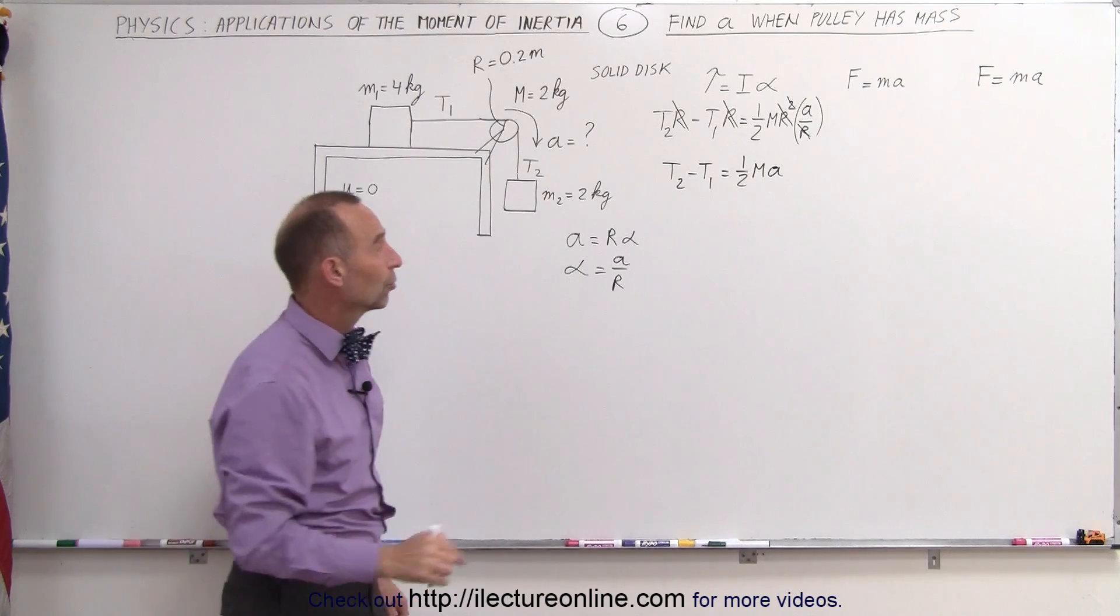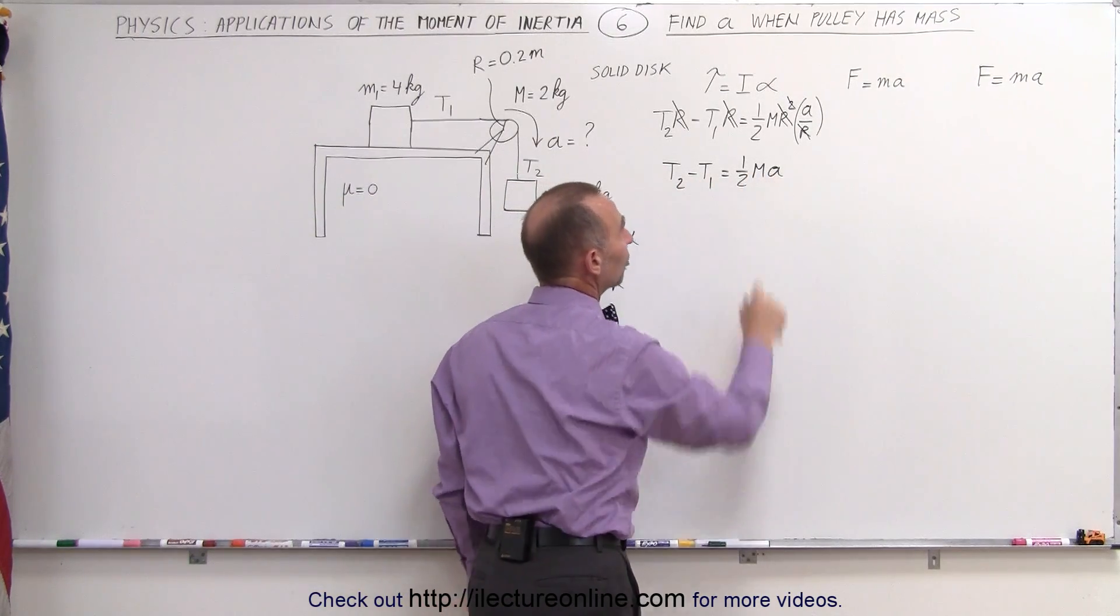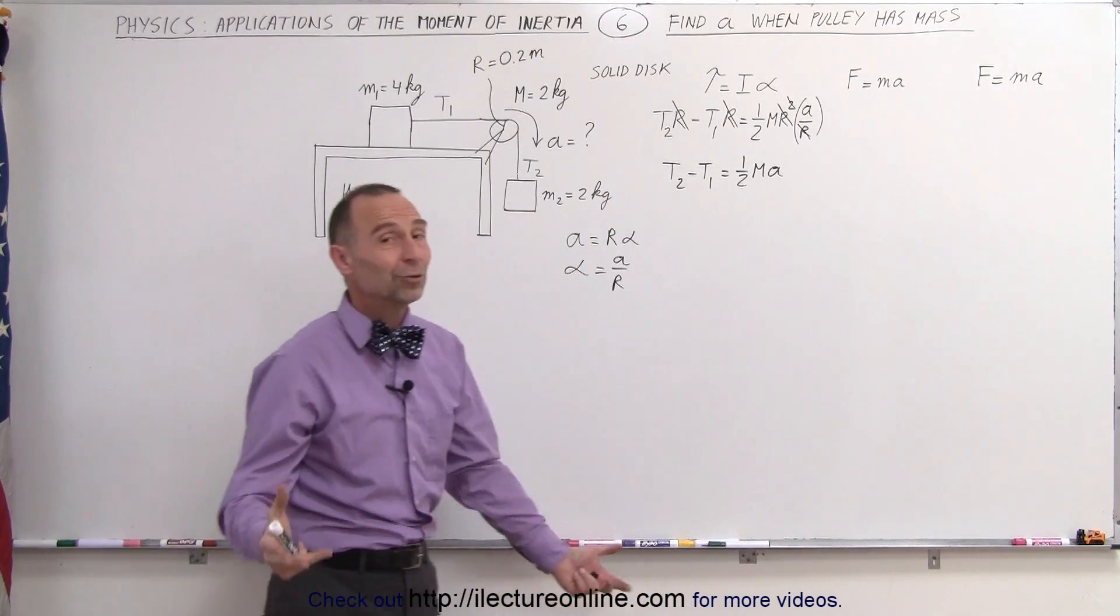Notice we have three unknowns. We don't know what T2 is, we don't know what T1 is, and we don't know the acceleration of the system. That's why we need two more equations.